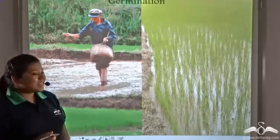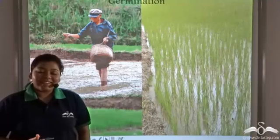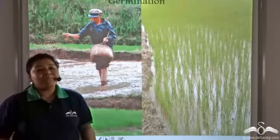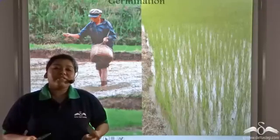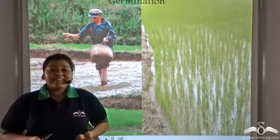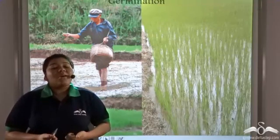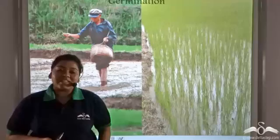Germination is the process by which the embryo within the seed develops to form a new plant when there are favourable environmental conditions. In this lecture, we are going to talk about all the conditions that are necessary for germination.